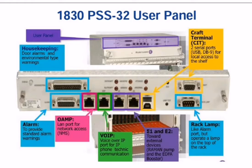I will explain the function of these ports one by one. The first one is patched for alarms to provide standard alarm warning. The next one is the OAMP port, which is the LAN port — we connect an RJ45 and through RJ45 we connect it with our business customers to give them network access, like Cisco and Juniper routers.